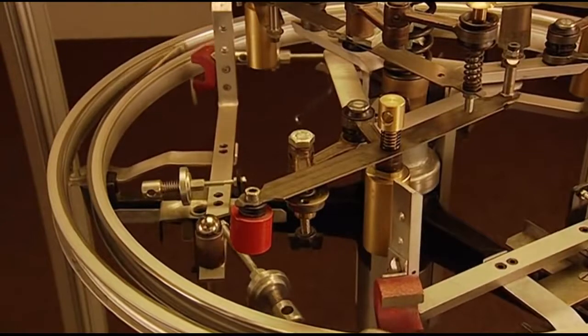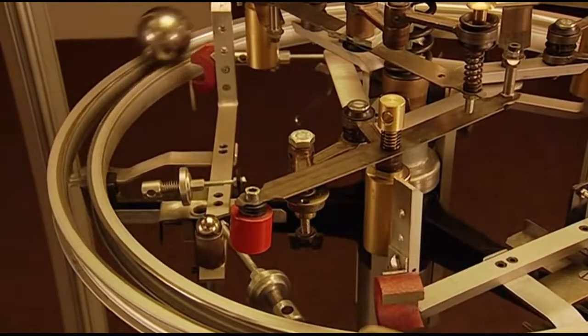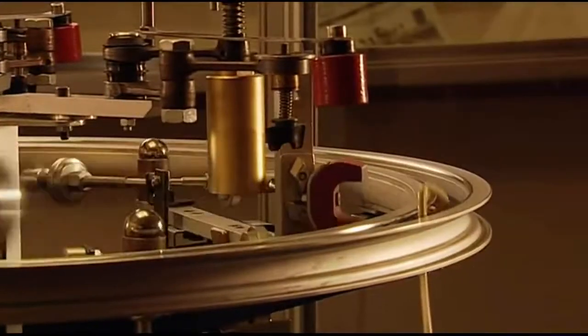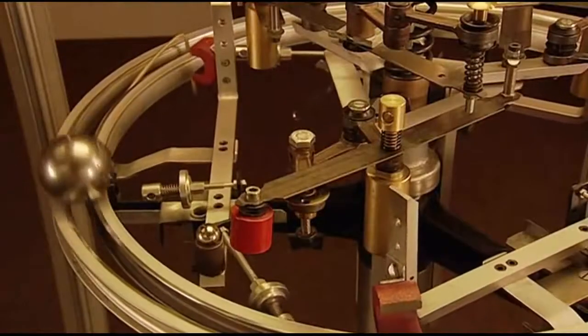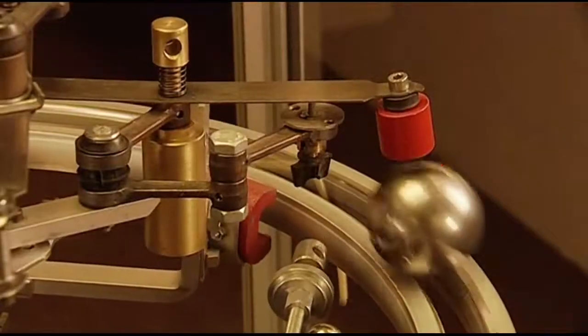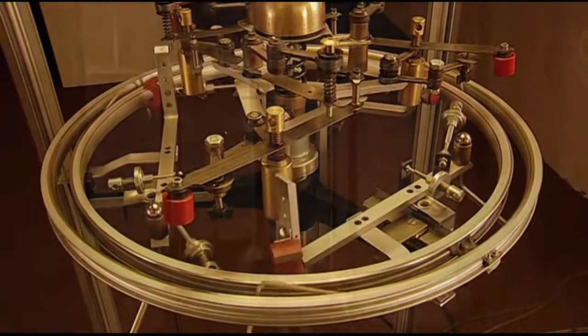When you consider that the internal combustion engine is only 30% efficient, 99% is an extraordinary score. But only at 100% can this machine qualify as perpetual motion. At 101% it can be said to produce surplus and therefore free energy.